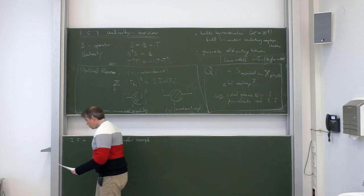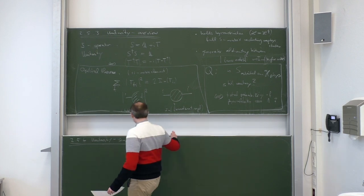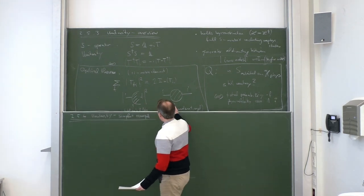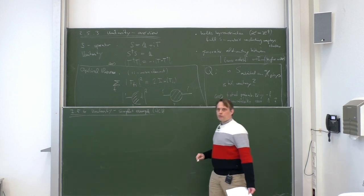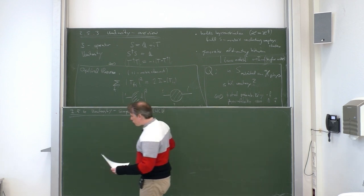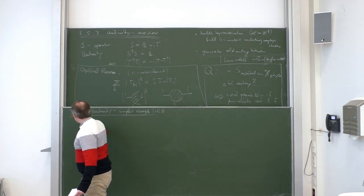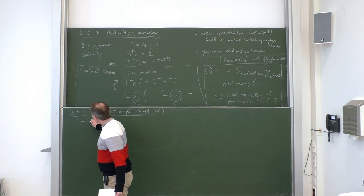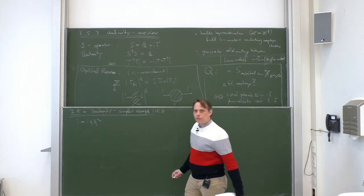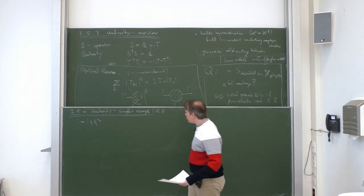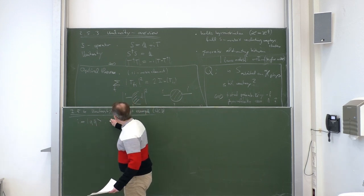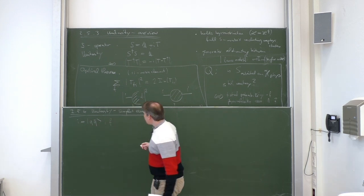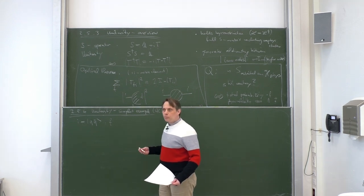Let us look at the simplest example and choose QCD with quarks and gluons and Faddeev-Popov ghosts. In QCD we fix an initial state which is a quark-anti-quark state — Q stands for the quark field which is a fermion field. Since it's the simplest case, we look at lowest order tree-level Feynman diagrams.